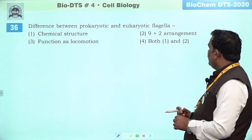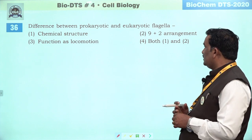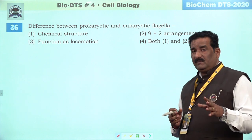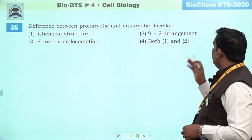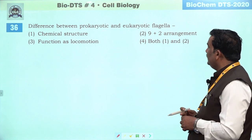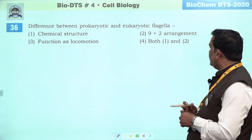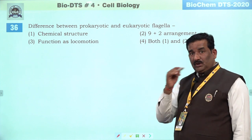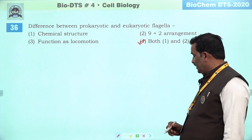Next question: difference between prokaryote and eukaryote cell flagella. Chemical structure — prokaryote mein flagella flagellin se bane hote hain, jabki eukaryote mein flagella tubulin se bane hote hain. 9 plus 2 arrangement eukaryote mein hai, jabki prokaryote mein yeh arrangement nahi paaya jaata. Isliye first and second options right hain, aur isliye fourth humare liye better option banta hai. Function ki basis par dekha jaaye toh dono mein function same hai — locomotion mein participate karte hain. Fourth is the right answer.